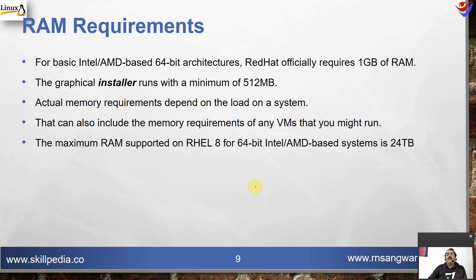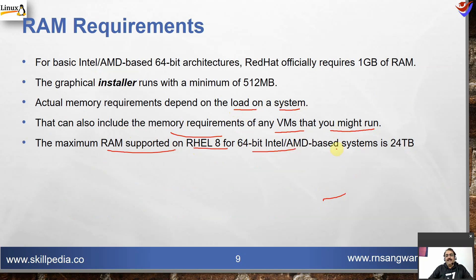RAM requirements for basic Intel or AMD 64-bit architecture: Red Hat officially requires 1 GB of RAM. The graphical installer runs with a minimum of 512 MB. Actual memory requirements depend on the load on the system, including the memory for any virtual machines you might run. The maximum RAM supported by RHEL8 on 64-bit AMD-based systems is 64 terabytes.